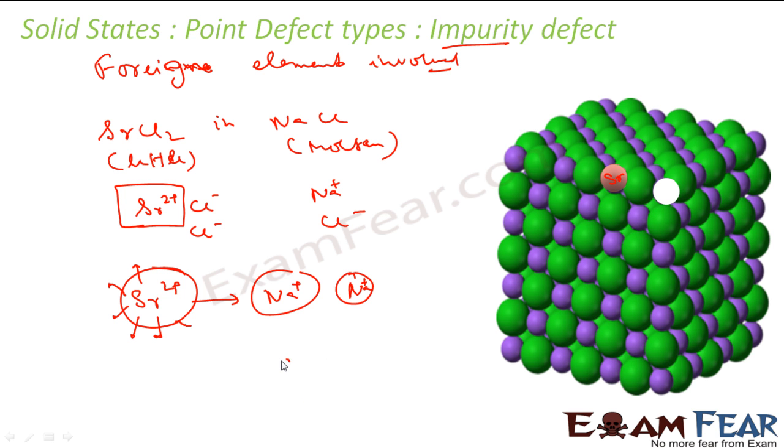Similar in case of CdCl2 and AgCl. So you take AgCl and you add CdCl2. Since Cd has plus 2 charge, so one Cd will kick out 2 silver, occupy one silver place, and one silver place will be empty. So you will get this kind of defect. This is called impurity defect where we have foreign elements. And foreign elements are creating problems. So in this case, sodium chloride, Sr is creating problem. It is kicking 2 sodium out, occupying one space, and one space is vacant.